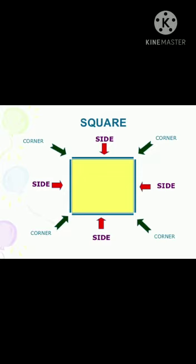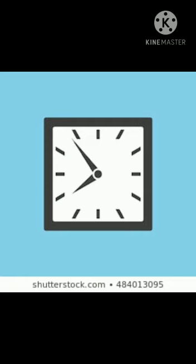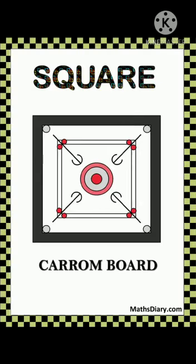Square. A square has four sides and four corners. All the sides are equal in length. For example, wall clock, photo frame and carom board.